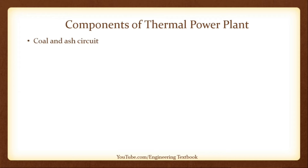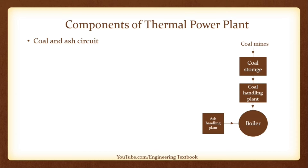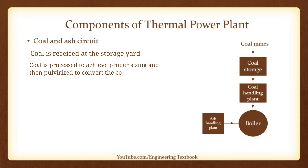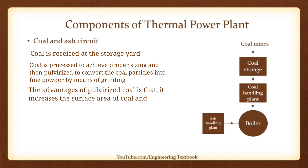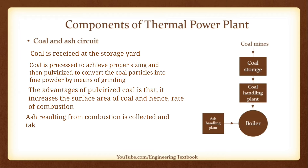Coal and Ash Circuit. Here is the diagram of the coal and ash circuit. Coal is received at the storage yard, processed to achieve proper sizing, and then pulverized to convert coal particles into fine powder by means of grinding. The advantage of pulverized coal is that it increases the surface area of coal and hence the rate of combustion. Ash resulting from combustion is collected and taken to the ash storage yard through the ash handling system.